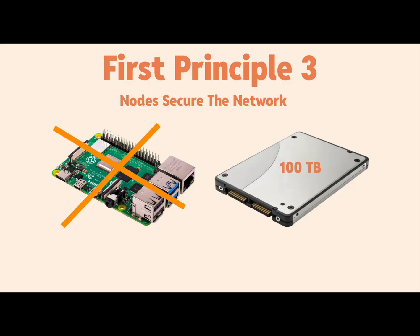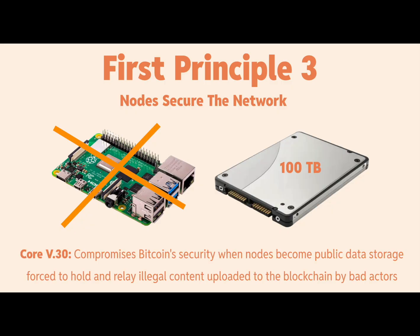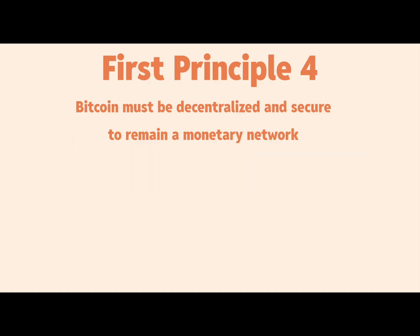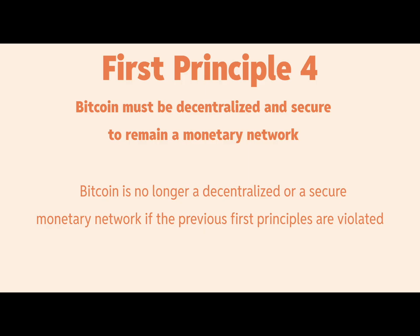First Principle Three: nodes secure the network. If the blockchain fills up with non-monetary data, nodes quickly become public data storage. When nodes are forced to hold and relay potentially illegal content uploaded by bad actors, running a Bitcoin node itself could become illegal — you'd be storing illegal data on a server in your home. There could also be viruses or malicious content. That compromises Bitcoin security. First Principle Four: Bitcoin must be decentralized and secure to remain a monetary network — and if the prior principles are violated, it simply is no longer a monetary network.